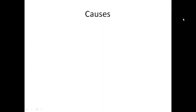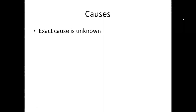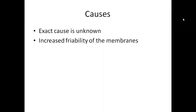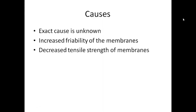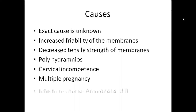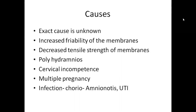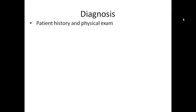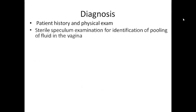Causes include: exact cause unknown, increased friability of the membrane, decreased tensile strength of membrane, polyhydramnios, cervical incompetency, multiple pregnancy, and infection — that is chorioamnionitis and urinary tract infection. Diagnosis is by patient history and physical examination.